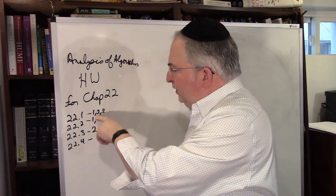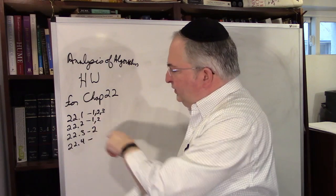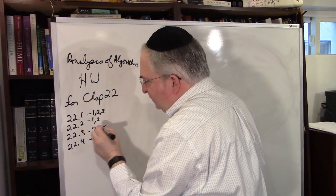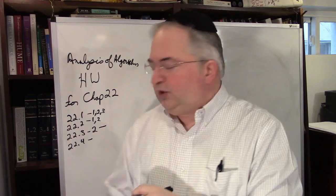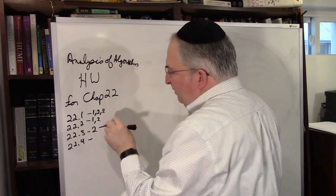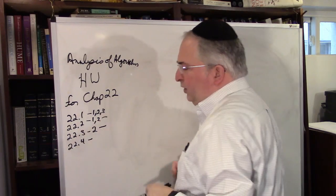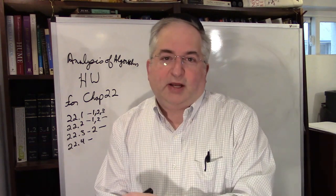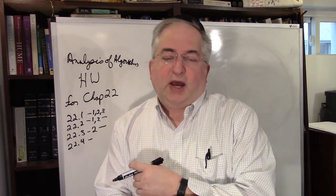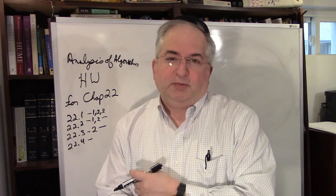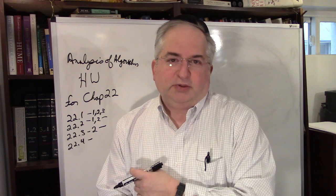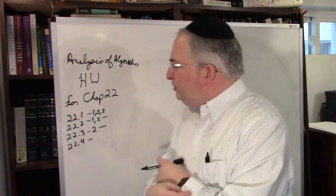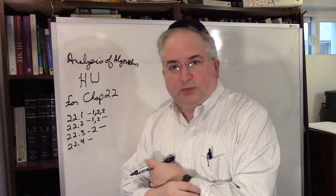We're going to do 22.1. I'm not going to do this one — it's a depth-first search, it takes a long time. I'm going to give you the answers to this one, but I'm not going to work it out. And this one is a topological sort — you're responsible for the material, but there was no good question to ask. So we'll mostly concentrate on problems 1 and 2.